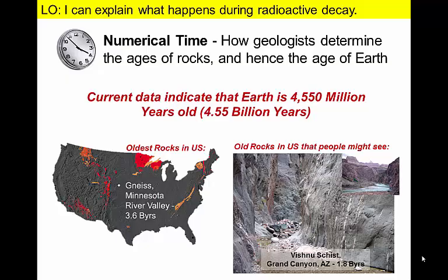Scientists first used observations of radioactive decay to estimate the age of Earth about a century ago. And today, we use information from the radioactive decay of elements preserved in minerals to establish the timing of geological events.